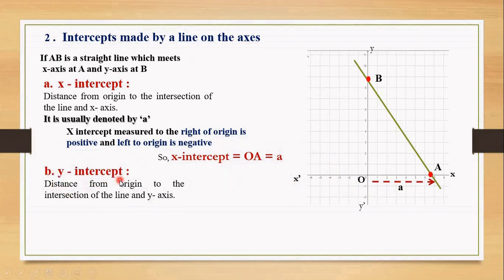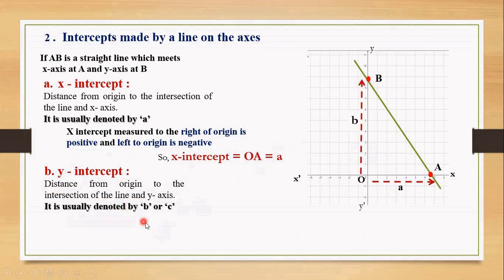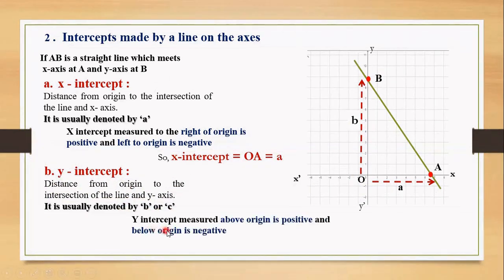Now let's define y-intercept. Consider the distance from the origin to the intersection of the line and y-axis — that is distance from origin to the point of intersection with y-axis, O to B. It is usually denoted by b or c; here we have denoted it by b. y-intercept measured above the origin is positive and below the origin is negative. Here in the figure y-intercept equals OB and it is denoted by b.